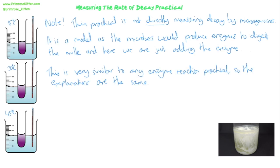The idea is that we do this at different temperatures — a 15°C beaker, a 30°C beaker, a 45°C beaker. As the temperature increases, we'd expect the rate of reaction to also increase. This would be shown by the colour change happening faster, or a faster decrease in pH if you're measuring pH — the time from pink to colourless would decrease, meaning it's happening faster.